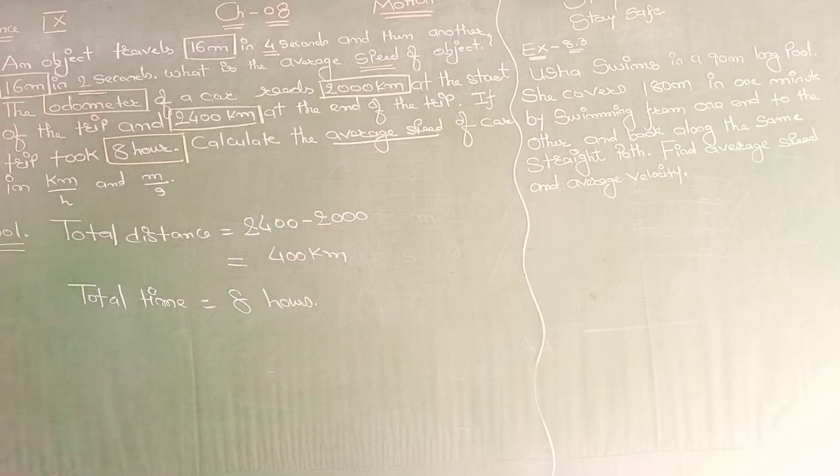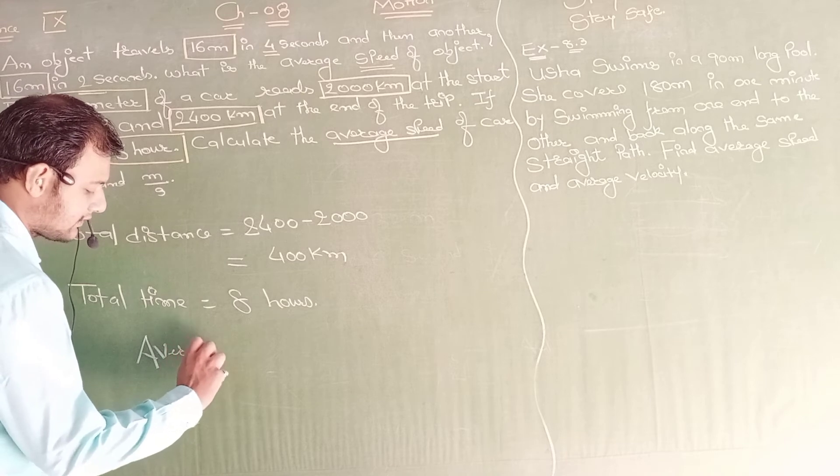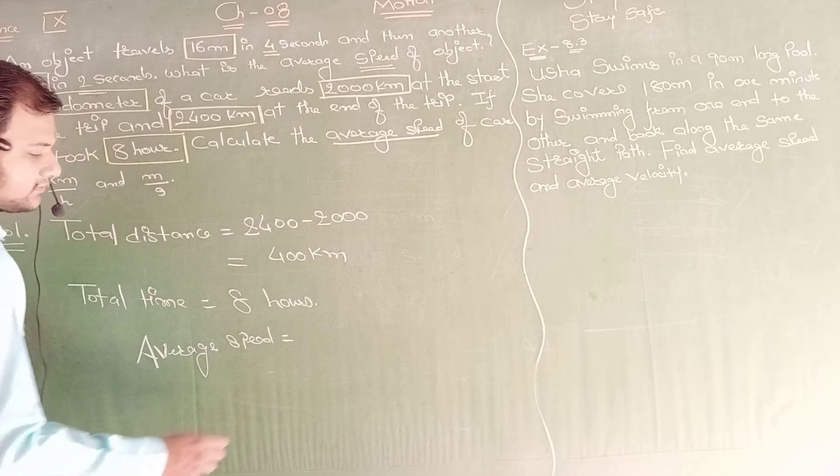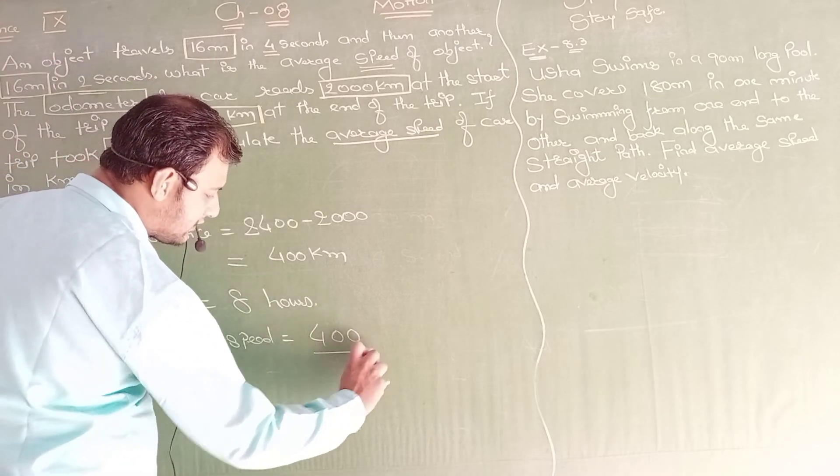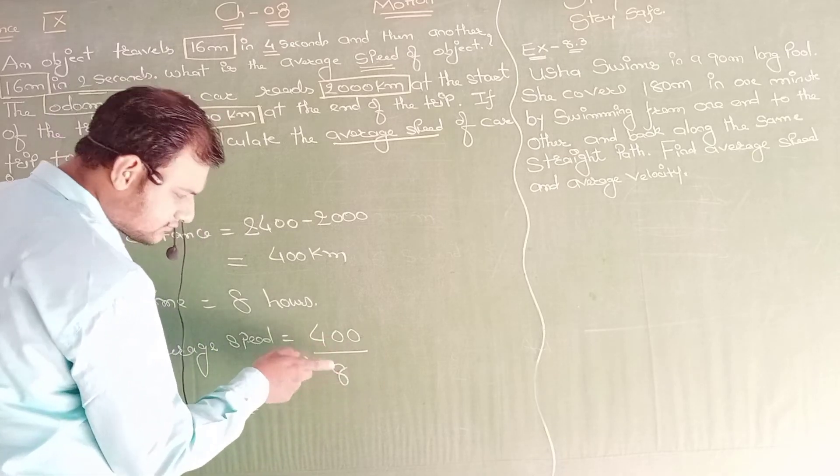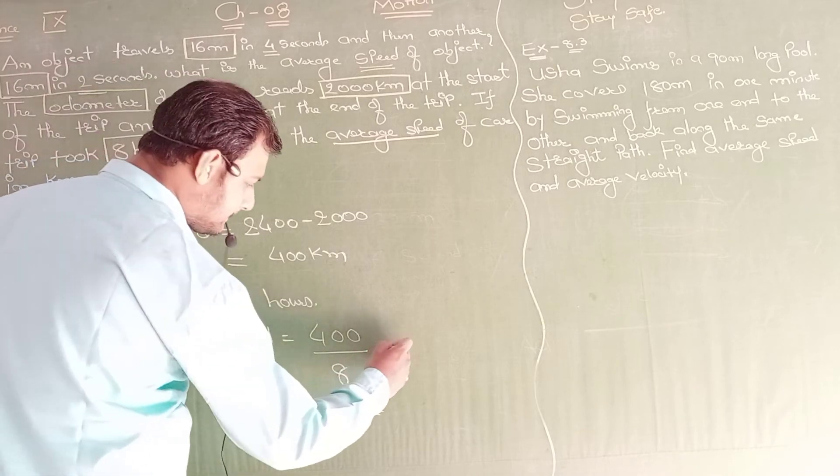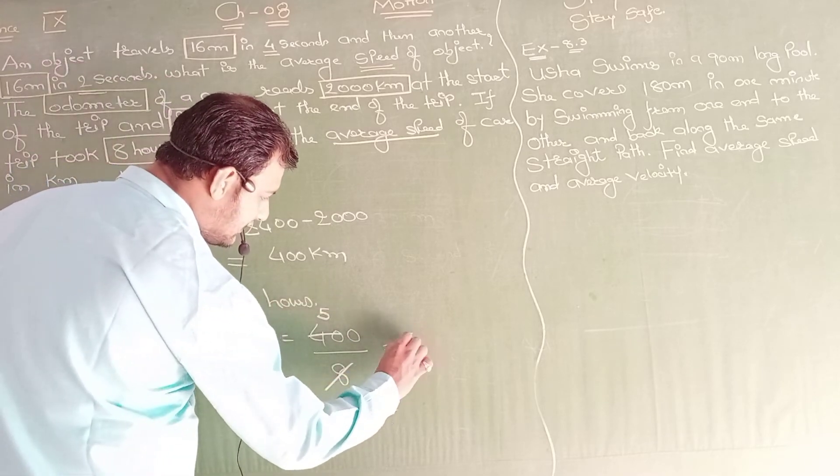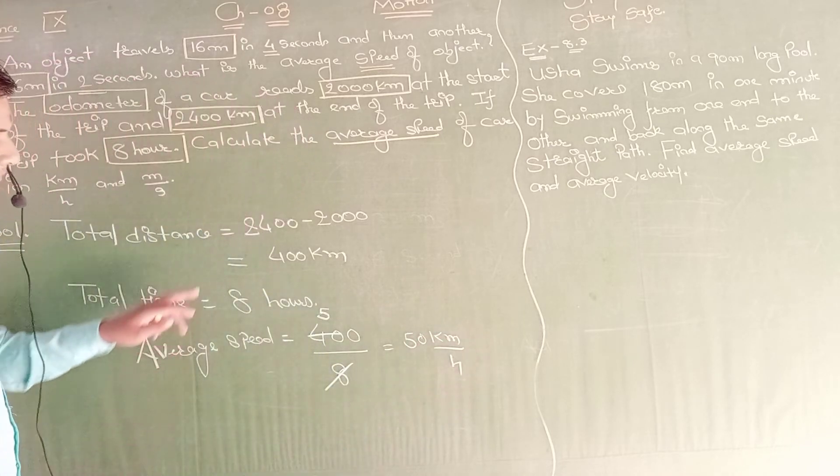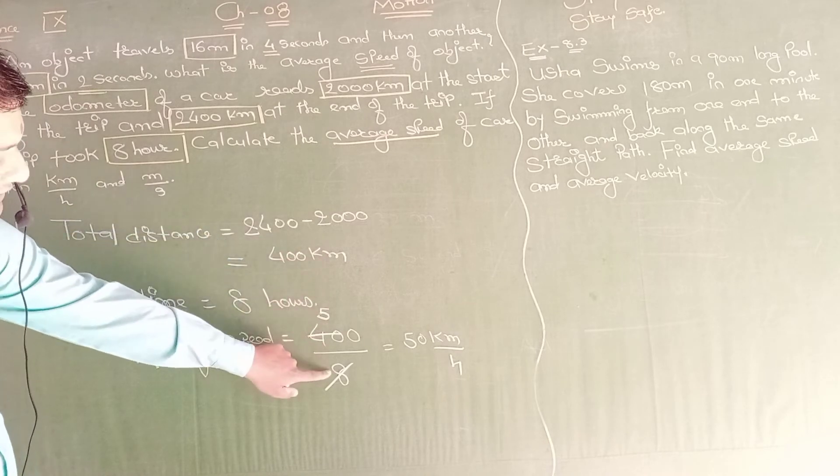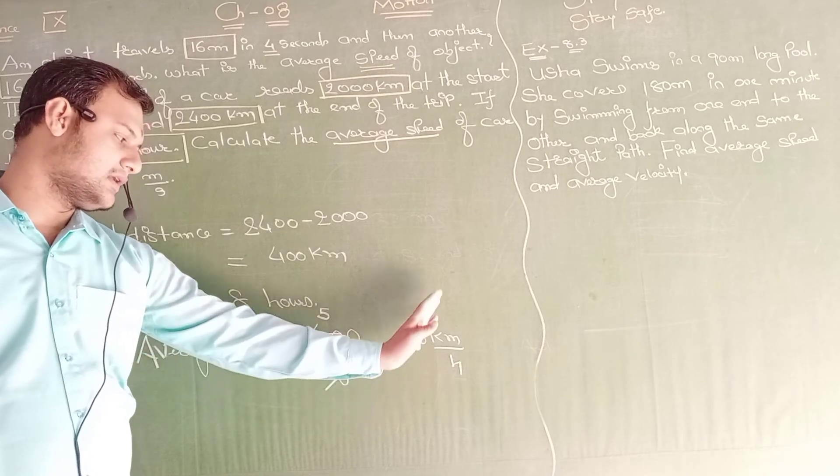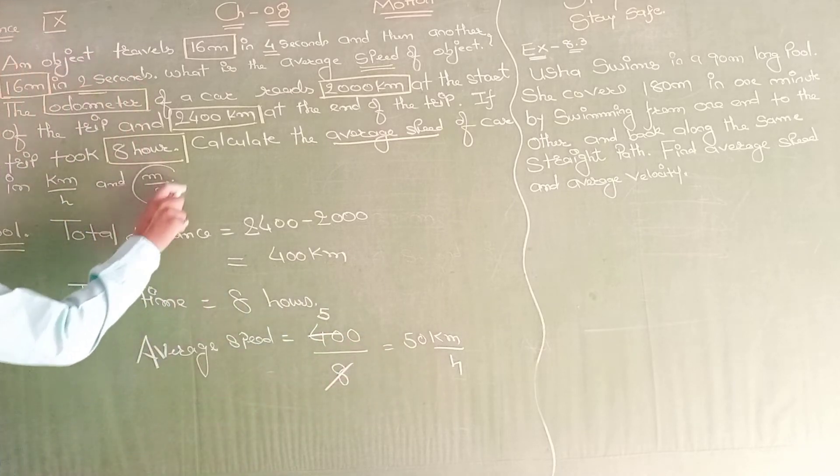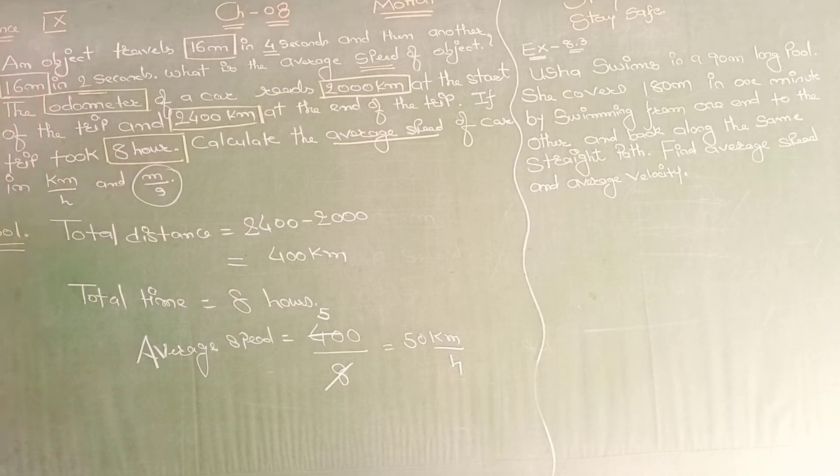Use your smart brain, dear students. Total distance equals odometer final reading 2400 minus initial 2000, which is 400 kilometers. Total time is 8 hours. Average speed equals 400 divided by 8, which is 50 kilometers per hour.